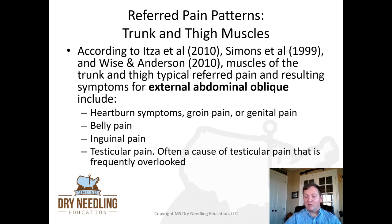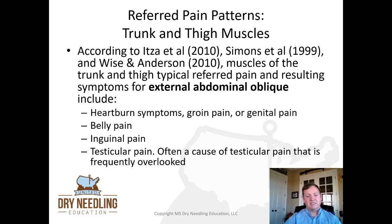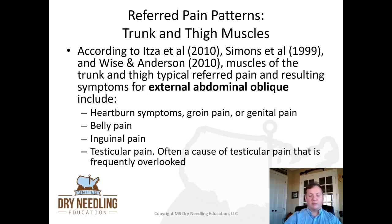If I'm going to needle the external oblique, I'm going to use a real-time ultrasound. We can go lateral and isolate the layers from the external oblique, internal oblique, down to the transverse abdominis with our ultrasound, and we can easily and safely throw a needle in that way. But if you can't needle it and you don't have an ultrasound, doing soft tissue work on the abdominals and obliques is very important, especially for testicular pain.